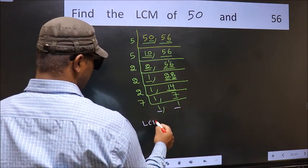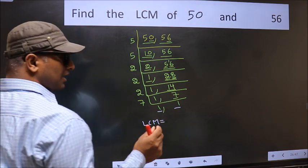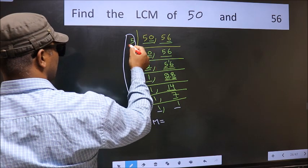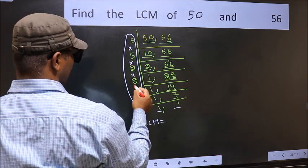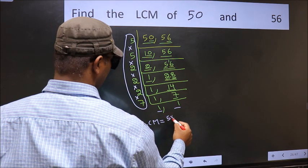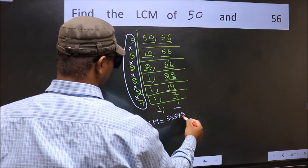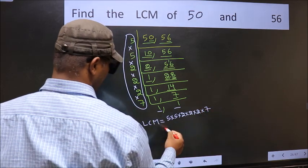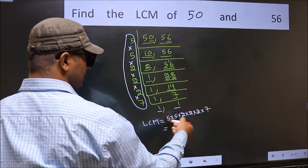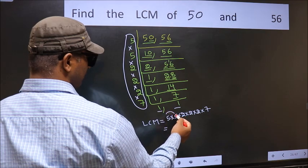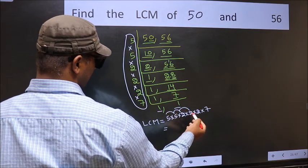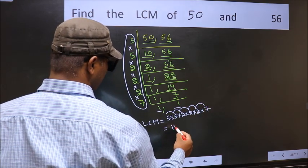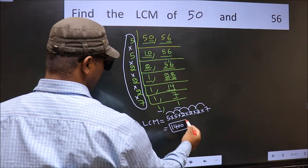So our LCM is the product of these numbers: 5 × 5 × 2 × 2 × 2 × 2 × 2 × 7. Let us multiply these numbers: 5 × 5 = 25, × 2 = 50, × 2 = 100, × 2 = 200, × 2 = 400, × 7 = 1400. So 1400 is our LCM.